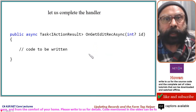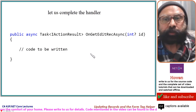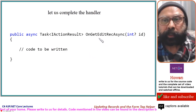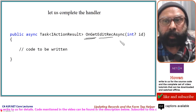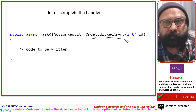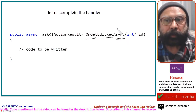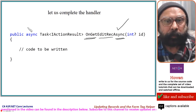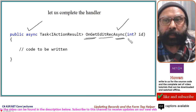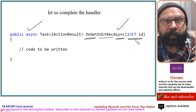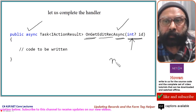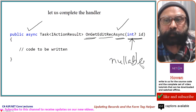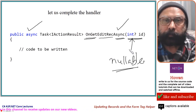Let us complete the handler. The handler is going to be named editrec, prefixed by OnGet and suffixed by Async. It will be public async, and this id is the id of the record that will be edited. This is nullable — we have already explained why it is nullable in the previous tutorial.